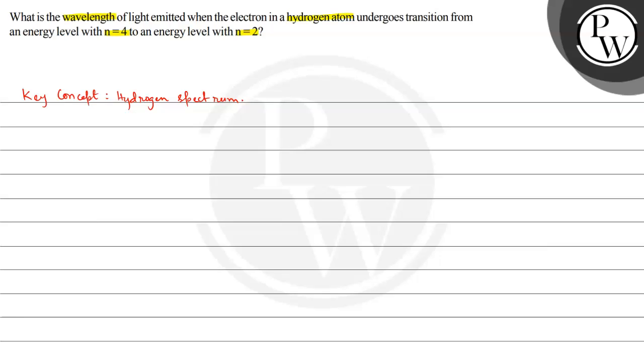This hydrogen spectrum has a constant known as Rydberg's constant, and the value is 109,677 centimeter inverse. We use this in the calculation of wave number.